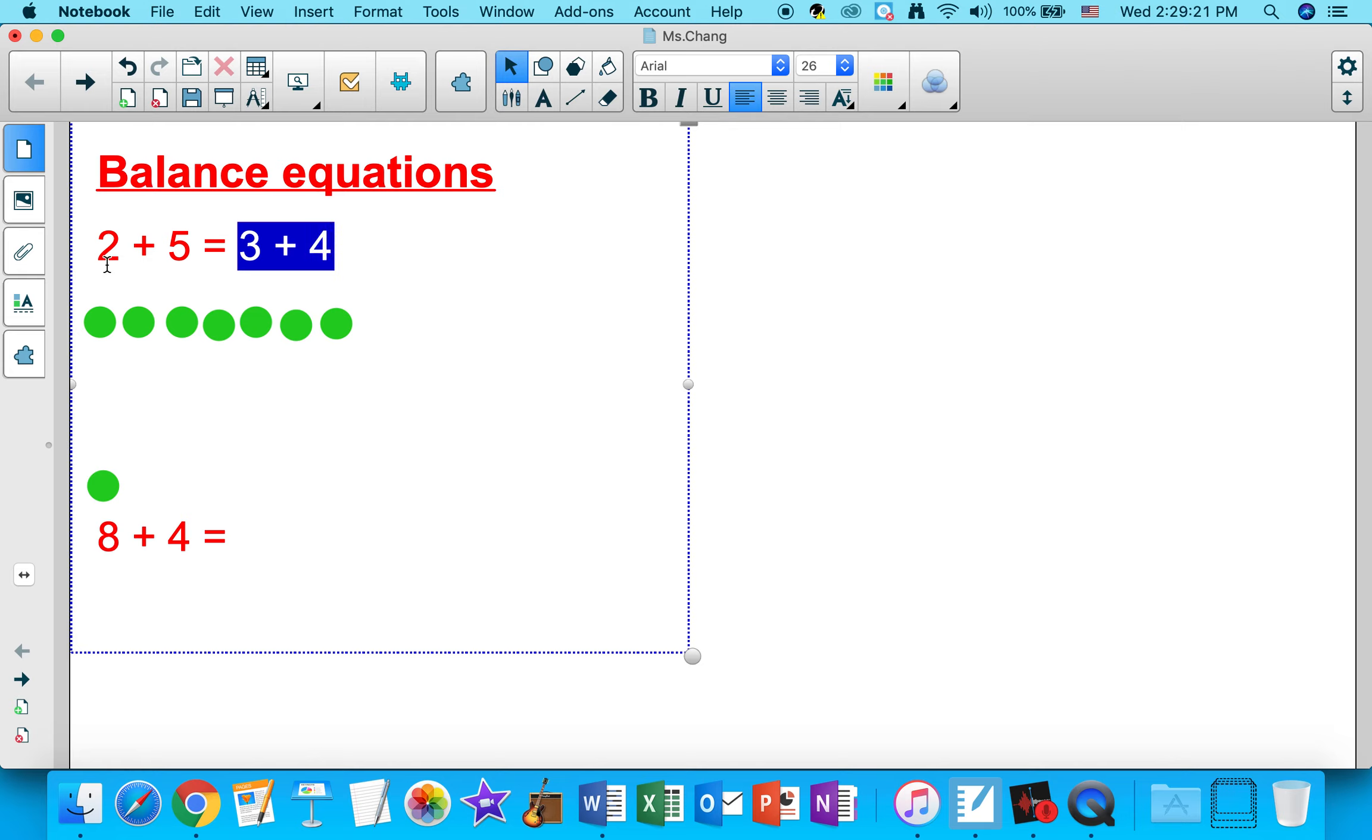So, even though this addition expression looks different from this addition expression, they work out to give you the same value in the end. So, you can say that they are equal to each other. So, 2 plus 5 equals 3 plus 4. Because 2 plus 5 equals 7, and so is 3 plus 4.